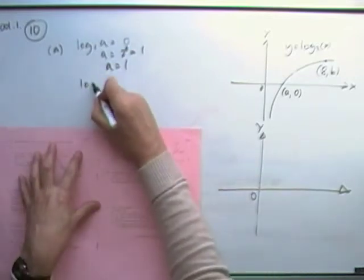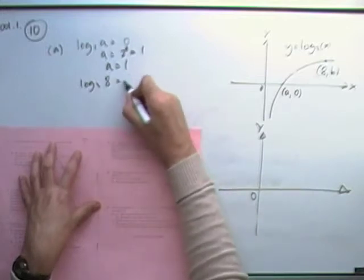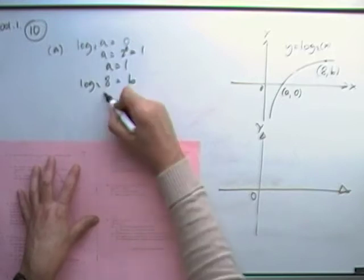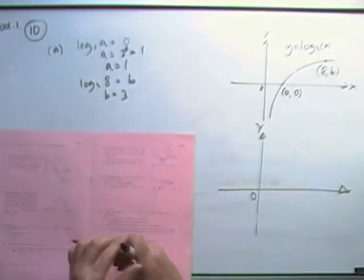Same with the next point. If you put a for x, you've got log base 2 of x equals b. Well, it says what power of 2? That's power 3. So b is 3. So the first part would be a is 1, b is 3.